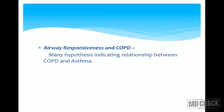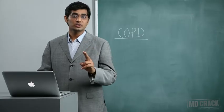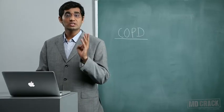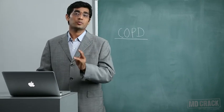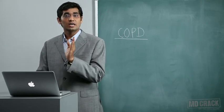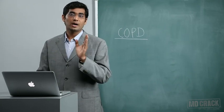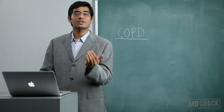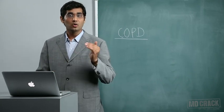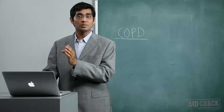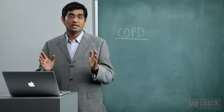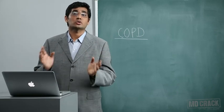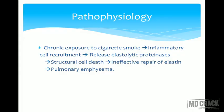There are two famous hypotheses about the relationship between COPD and asthma. According to the Dutch hypothesis, COPD and asthma are part of the same disease but present differently. According to the London hypothesis, COPD and asthma are completely different diseases and cannot be related to each other.